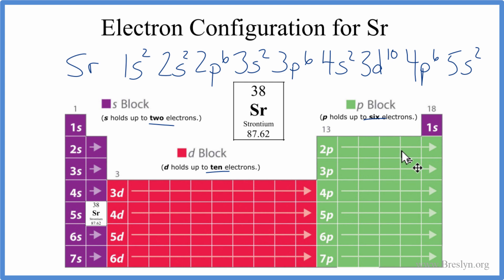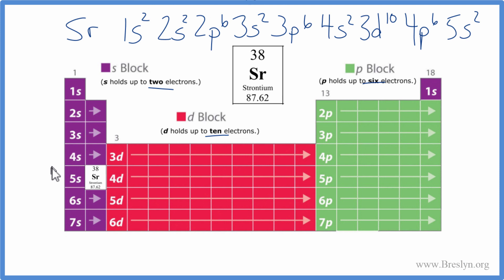If you want to write the condensed notation for strontium, so you don't have all of this here, we'll look back and go to the noble gas before strontium. That's right here. That's krypton. So we can write Kr, the symbol for krypton, put it in brackets, and then all we have after that is the 5s¹, 5s². So we'll just put 5s². And this is the condensed notation for the electron configuration for Sr, strontium. So this is a little easier to write than all this. It just means the same thing.